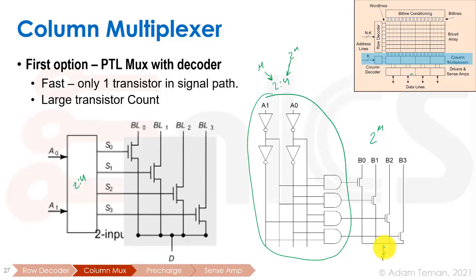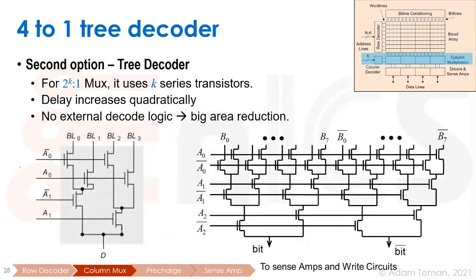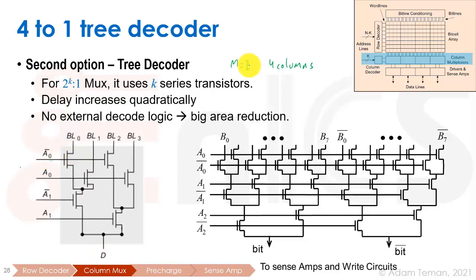This is what the column multiplexer is doing, and we often call this a Y decoder or column decoder because we implement the multiplexer using a decoder. The other option is to use what we call a tree decoder. With M equal to two in the example, we have four columns — 2^M — and we want to take those four columns and propagate only one to the output. Each bit line is connected to a transistor that gets the A0 or A0-bar input.